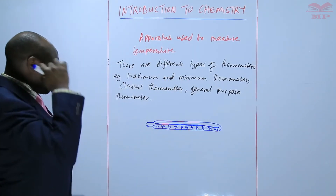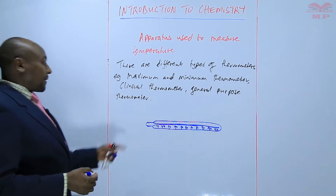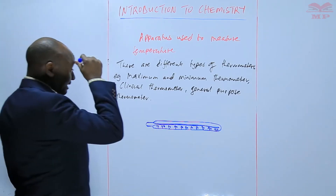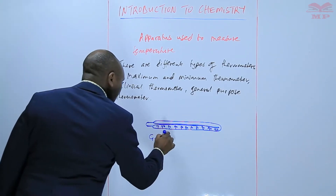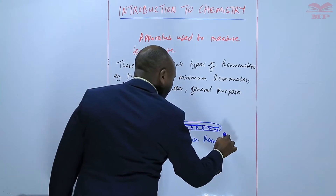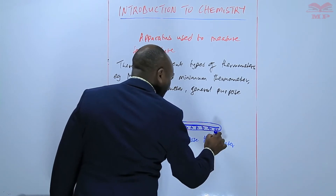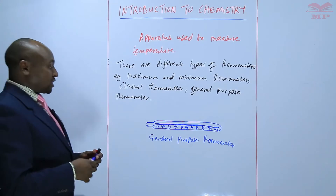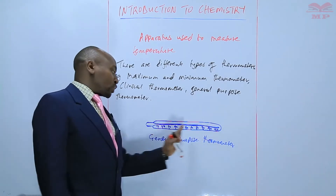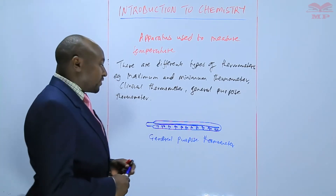The general purpose thermometer can either be made of mercury inside the liquid, or it can be made of alcohol. These general purpose thermometers should be able to measure up to 110 degrees Celsius, so that they can cater for most of the reactions that take place in chemistry.